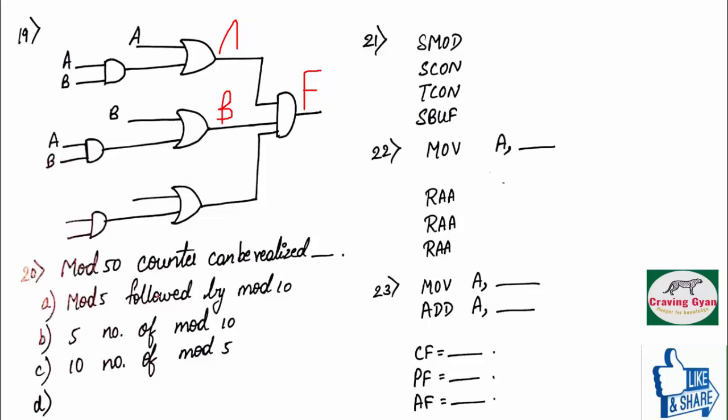Twentieth question. Mod 50 counter can be realized using mod 5 followed by mod 10. Find number of mod 10 counters, 10 number of mod 5 counters, they have asked. What do you mean by mod 50 counter, which is going to count from 0 to 49?